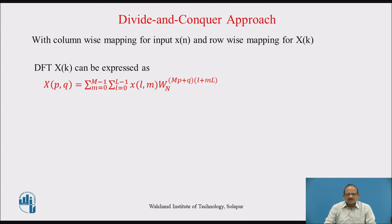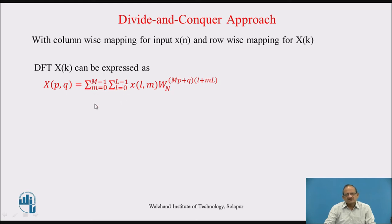For our approach, let us consider the column-wise mapping for input x(n) and row-wise mapping for DFT sequence X(k). With that, X(k), which is the summation from n = 0 to N−1 of x(n)·W_N^(kn), can be written as X(p, q) as a double summation over m = 0 to M−1 and l = 0 to L−1 of x(l, m)·W_N^(kn), where k = M·p + q (row-wise) and n = l + M·l (column-wise). So the DFT equation can be written in terms of a 2D array.